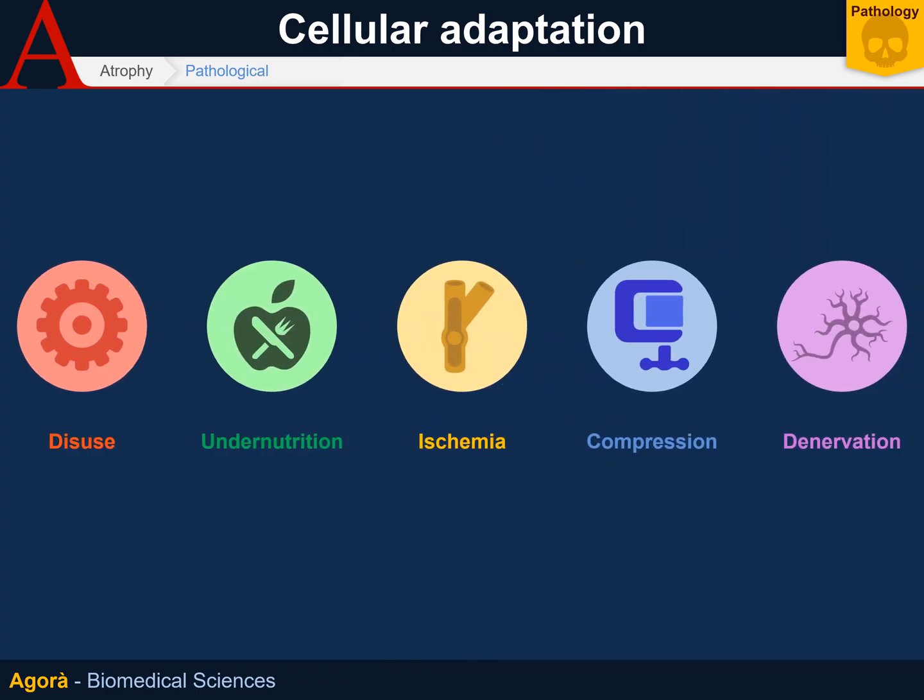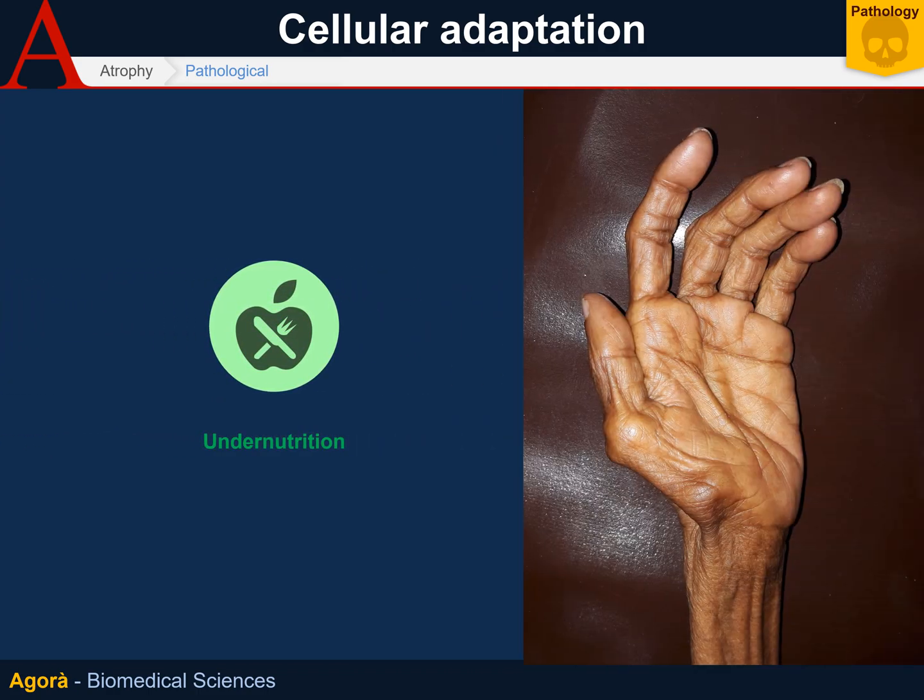Atrophy from undernutrition can be classified into two forms: marasmus and cachexia. Marasmus is a severe form of malnutrition where muscle proteins are converted through glucogenesis into energy. Cachexia, the more severe form, is typical of malignant tumors, where massive production of cytokines such as TNF-alpha may lead to the loss of adiponectin and consequently to lipid and protein depletion.